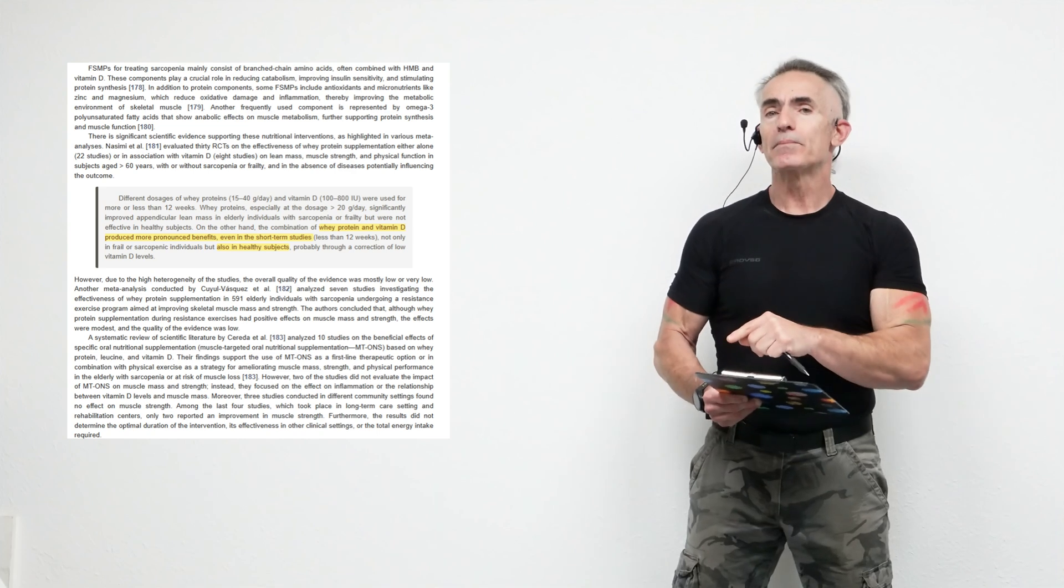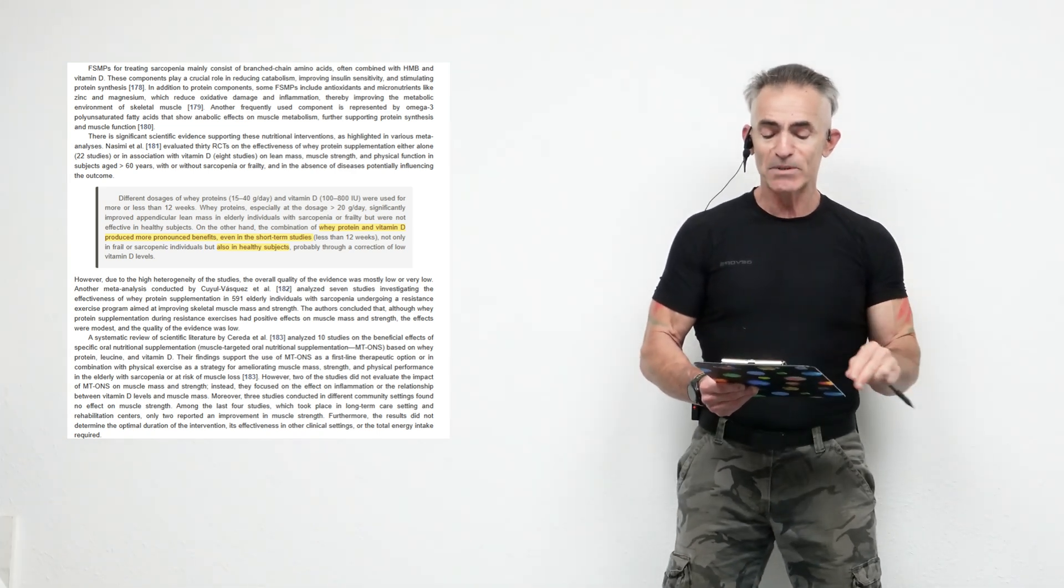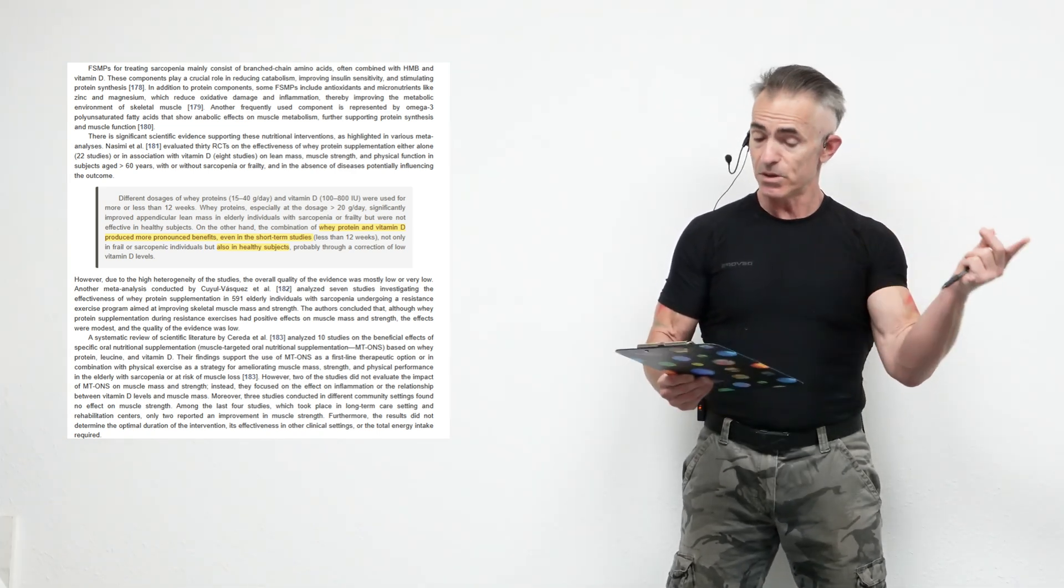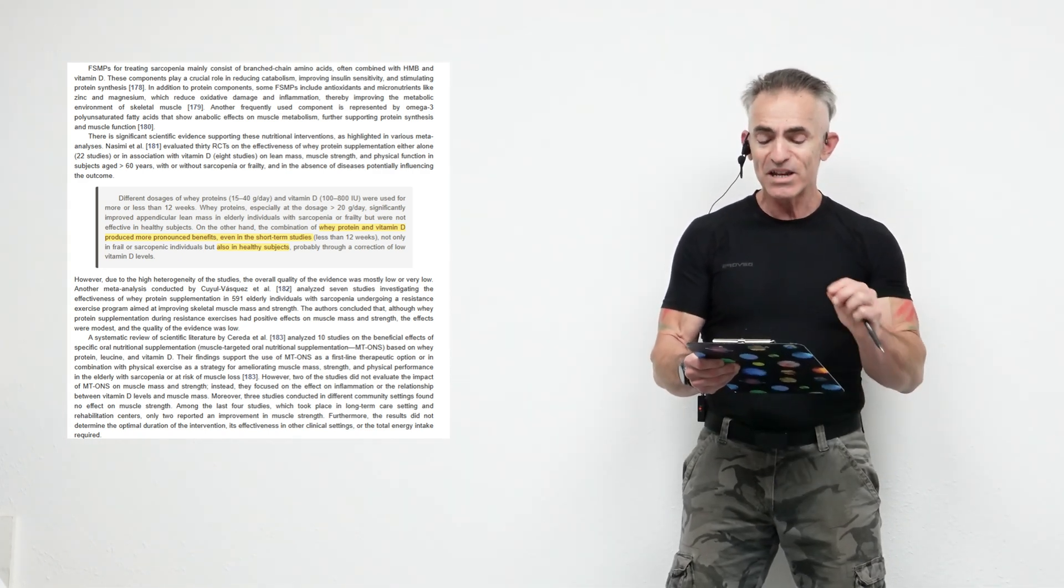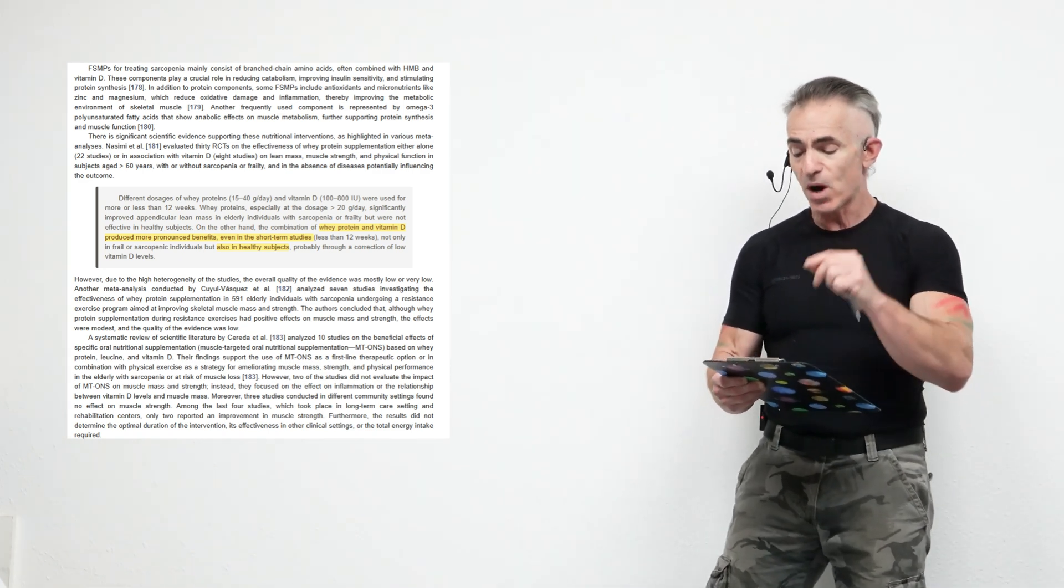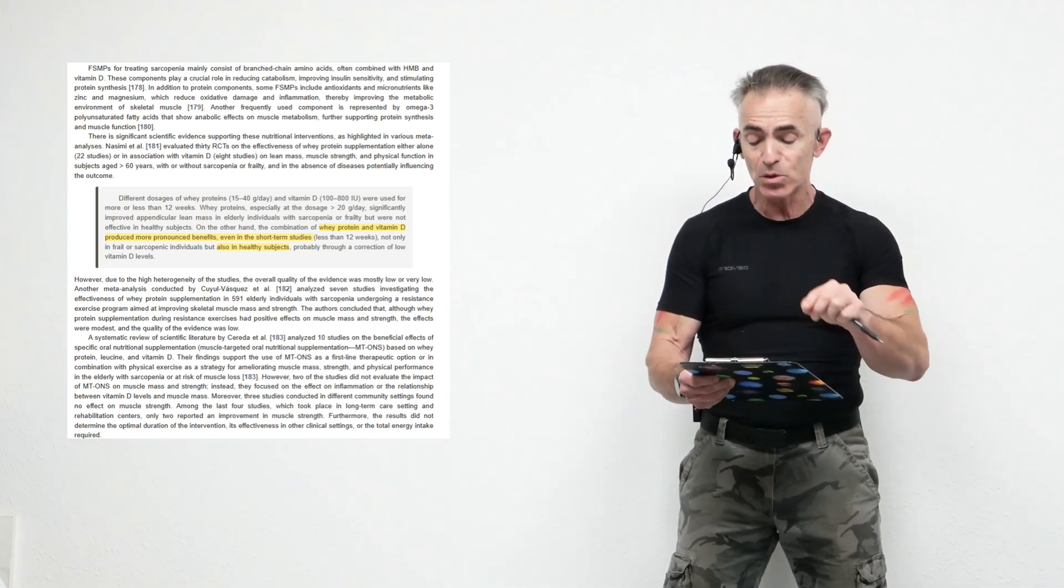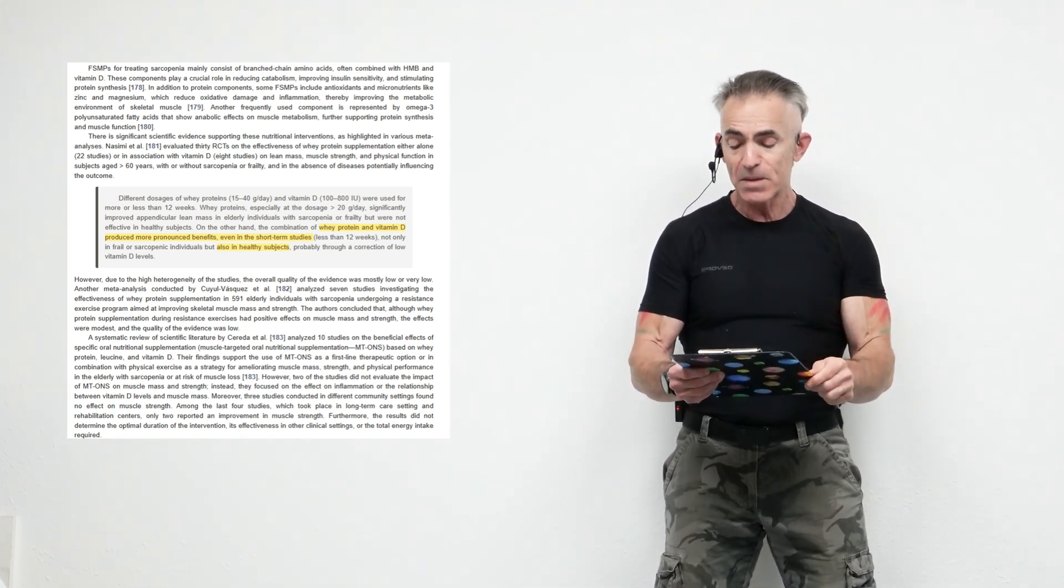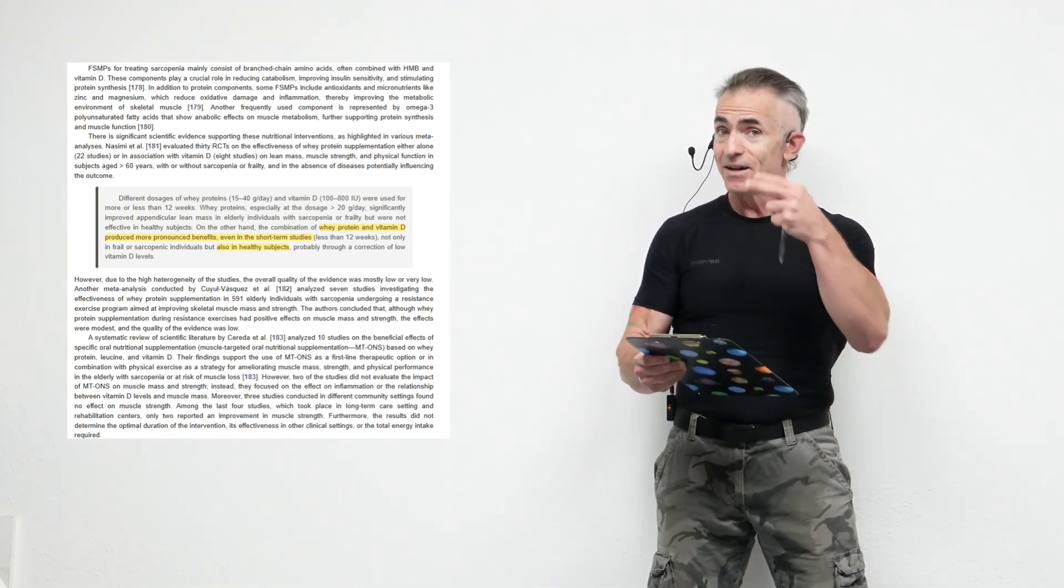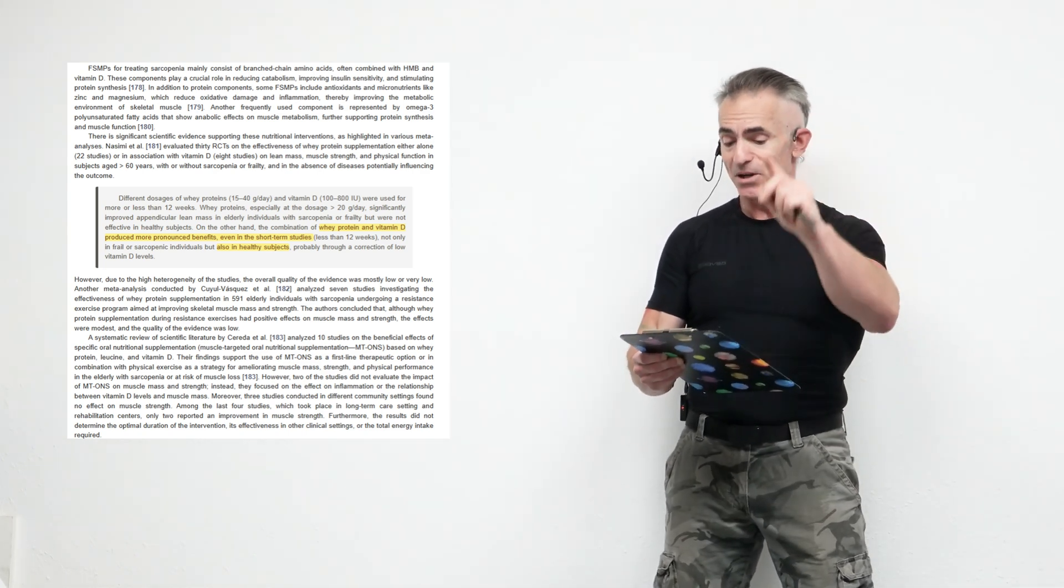Highlight number one: different dosages of whey protein 15 to 40 grams a day and vitamin D 100 IUs, very low, to 800 IUs, were used for more or less than 12 weeks. Whey protein, especially in dosages of greater than 20 grams a day, significantly improved appendicular lean mass in elderly individuals with sarcopenia or frailty, but were not effective in healthy subjects. You want to see what made it effective? Here we go.